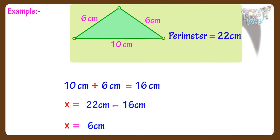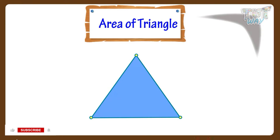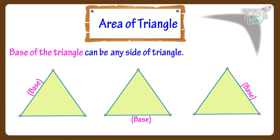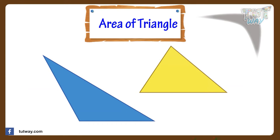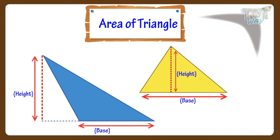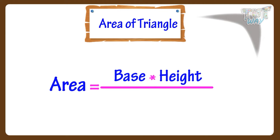Now we will be learning how to find the area of a triangle. Here we have a triangle. For finding its area we need two things: base and height. The base of a triangle can be any side of the triangle, and height is measured at a right angle to the base. Draw a perpendicular to the base to get the height of the triangle. Area is equal to base multiplied by height divided by 2.